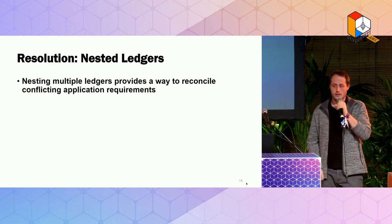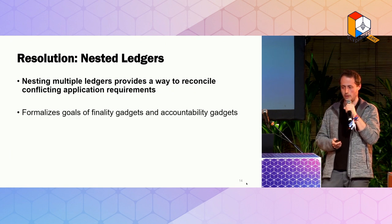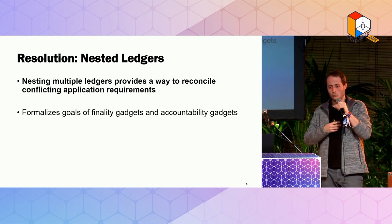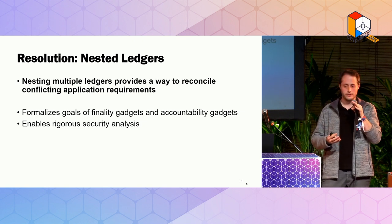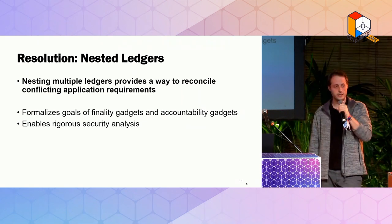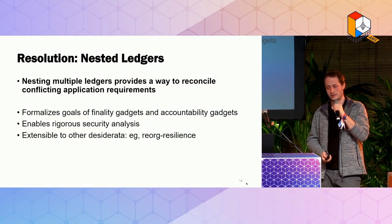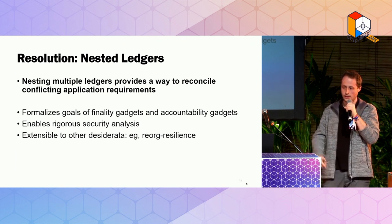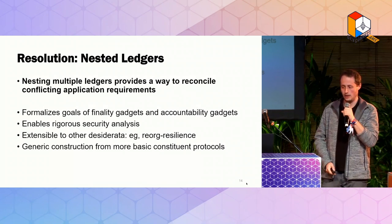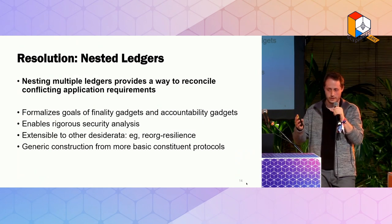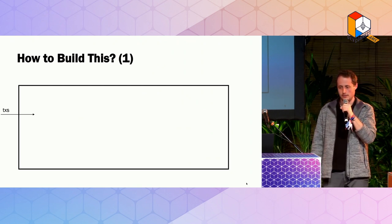The big takeaway is that nesting multiple ledgers provides a way to reconcile conflicting application requirements. It allows us to formalize the goals of finality and accountability gadget constructions. Now that we have a formal goal, we can do a rigorous formal security analysis and prove theorems to make sure our protocols actually satisfy them. We have a description that is extensible to other requirements — for example, reorg resilience, which is very much under discussion right now, fits well into this picture. And given this picture, we can come up with generic constructions of how to get such nested ledger protocols from basic constituent protocols.